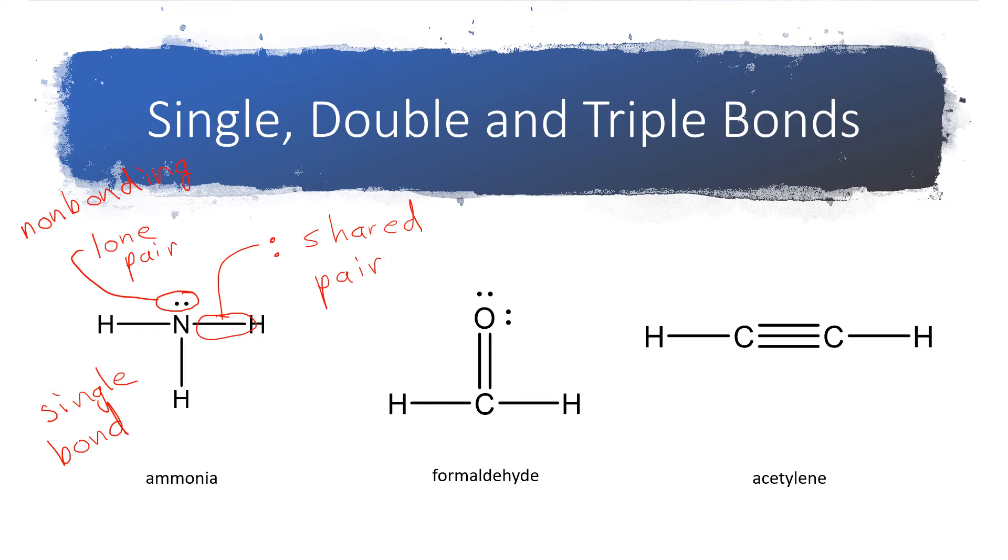If instead we're going to share two pairs of electrons or have two bonds, we're going to call that a double bond. A double bond consists of four shared electrons or two pairs of shared electrons.